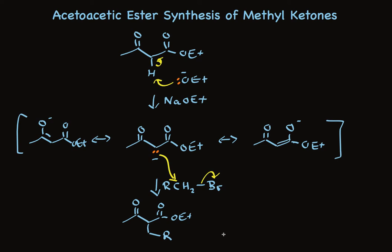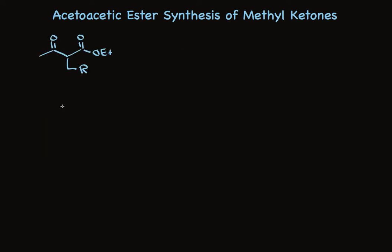But we also have to lose the carboethoxy carbon. To make that happen, the ester has to be transformed into a carboxylic acid. Saponification using base in water is the standard method. The initial product is a carboxylic acid salt, which is readily protonated using a strong acid like sulfuric acid in water.